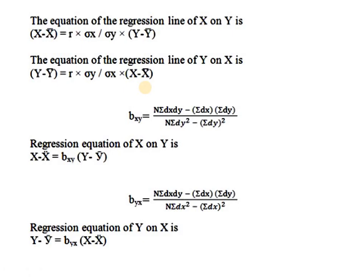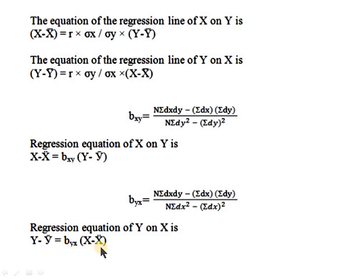To find the regression coefficient, we use the formula: b_xy equals (n·Σdx·dy minus Σdx·Σdy) divided by (n·Σdx² minus (Σdx)²). Then the regression equation of y on x is substituted as: y minus y-bar equals b_yx times (x minus x-bar). Vice versa, the regression equation of x on y is found similarly.